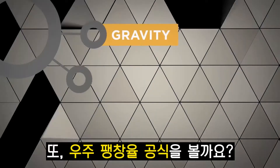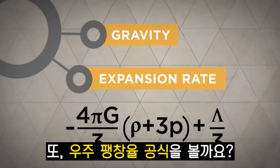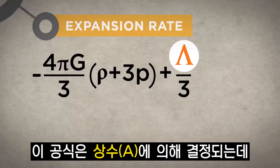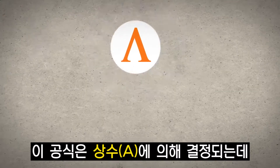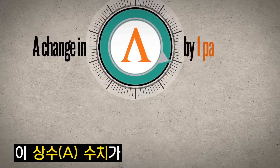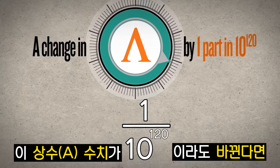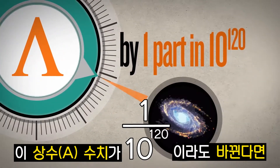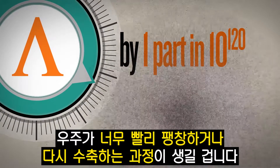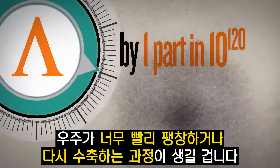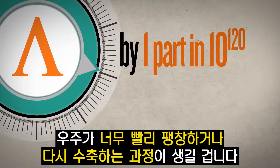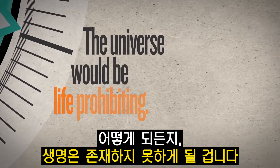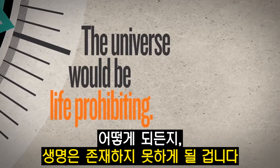Or consider the expansion rate of the universe. This is driven by the cosmological constant. A change in its value by a mere 1 part in 10 to the 120th parts would cause the universe to expand too rapidly or too slowly. In either case, the universe would again be life-prohibiting.